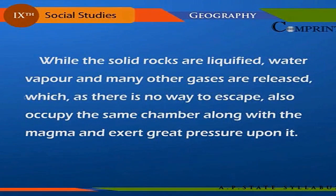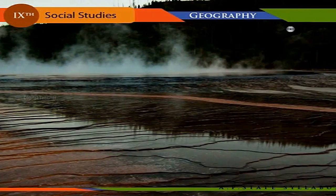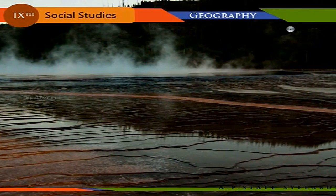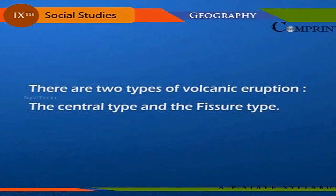As solid rocks are liquefied, water vapor and many other gases are released. With no way to escape, these gases occupy the same chamber as the magma and exert great pressure upon it. As the excessive heat and pressure are released, the magma solidifies again forming igneous rocks. Some magma solidifies along the passages to the Earth's surface — this process is called volcanicity. There are two types of volcanic eruption: the central type and the fissure type.